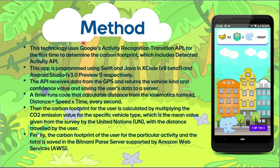The carbon footprint for the user is calculated by multiplying the CO2 emission value for the specific vehicle type, which is the mean value given by a United Nations survey. The UN takes a survey every year providing CO2 emissions by vehicle type — for example, a car produces around 288 grams per kilometer travelled, while a modern SUV produces around 400 to 500 grams per kilometer. This gives an almost accurate answer, with an accuracy of plus or minus 10. The carbon footprint is saved for the particular activity, the total is calculated, and it is saved in the Bitnami Power Server supported by Amazon Web Services.